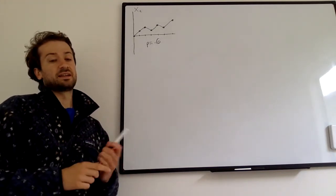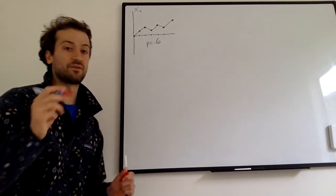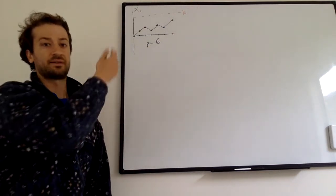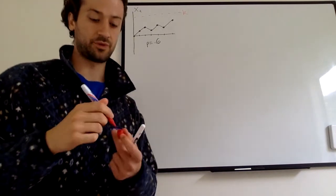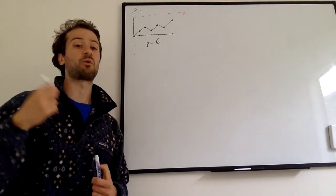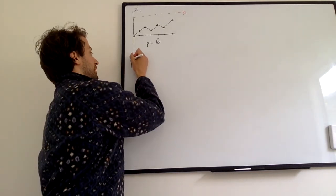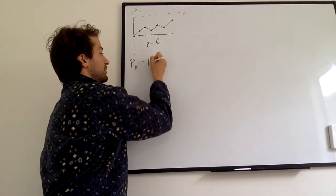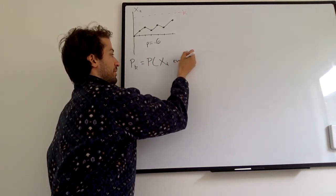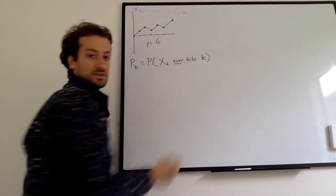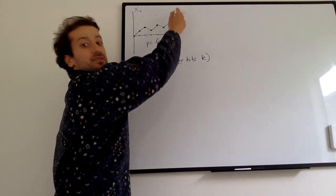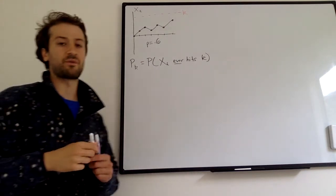So what we're going to be interested in is the probability of hitting a certain value K. Let's say K equals 10, K equals 100, K equals 200. If you let this simple random walk run forever, we want to find the probability of ever hitting that value. We're going to call that P sub K — the probability that X sub T, our stochastic process, ever hits K. So we could hit it in 20 steps or 30 steps; it just runs, and as soon as it reaches that K value, we've hit K.